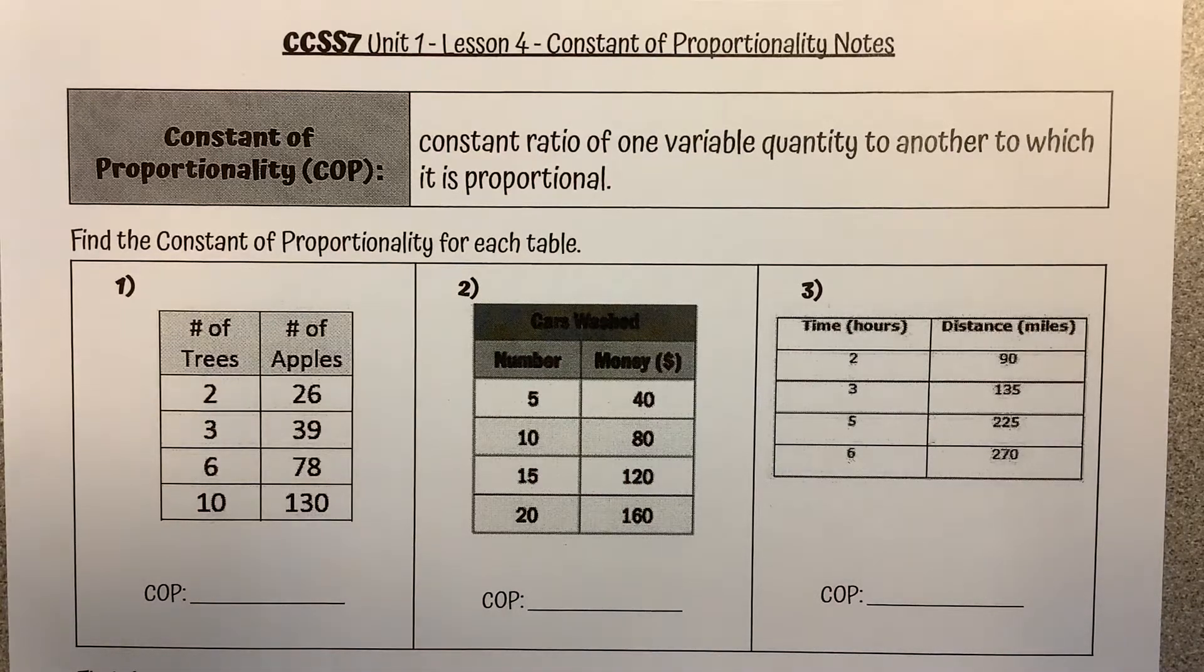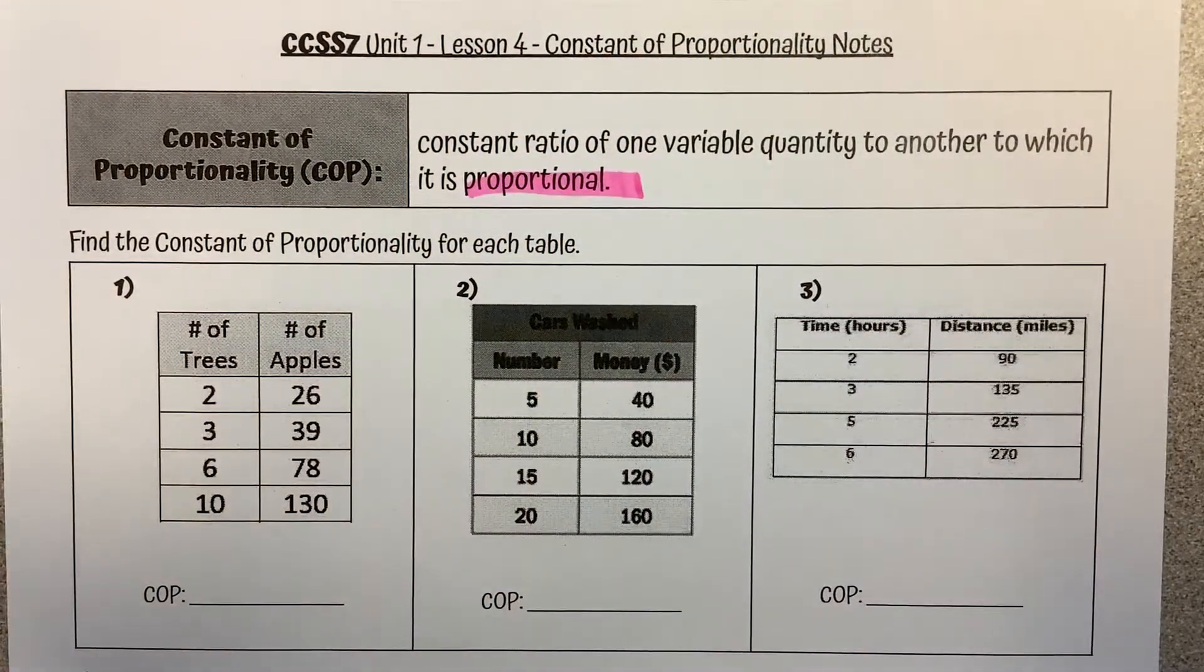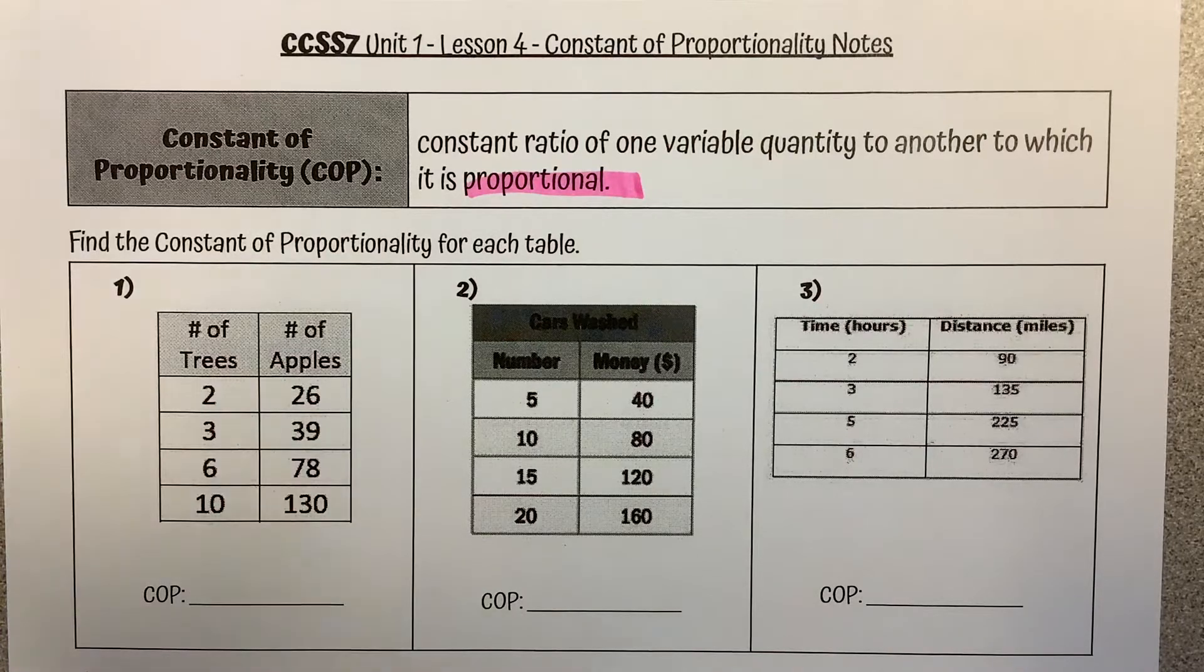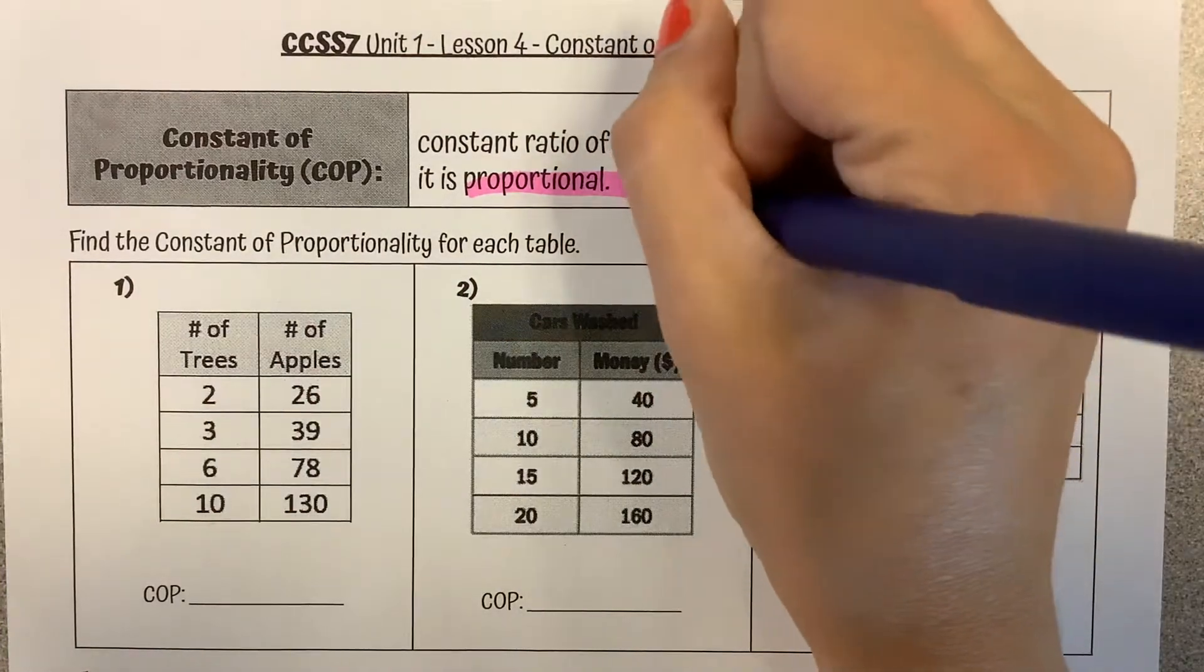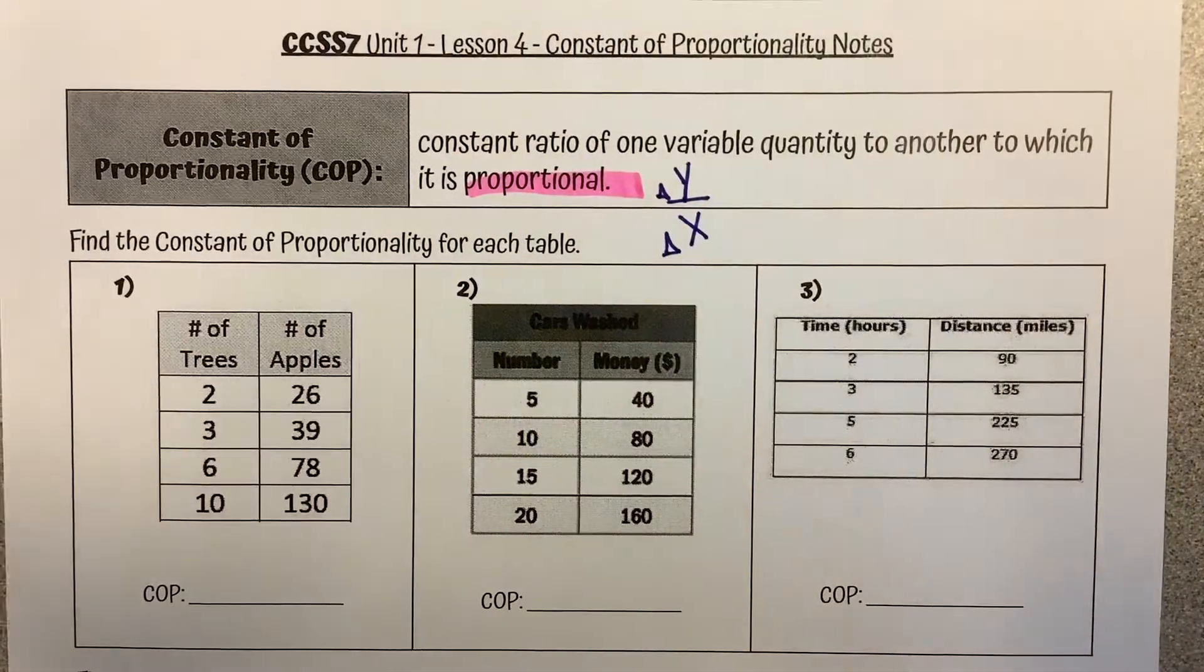All right, for today's lesson, we're going to talk about the constant of proportionality. So the constant of proportionality is a constant ratio of one variable quantity to another to which it is proportional. Specifically, we are just looking at proportional relationships, and we are going to look at the ratio of y to x, the change in y to the change in x.